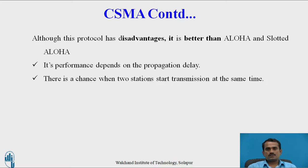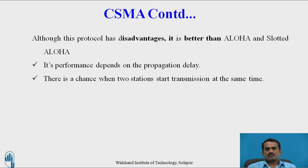In the previous video, we discussed about Aloha and Slotted Aloha. In Aloha, more than two stations can simultaneously want to transfer data, and after transmitting, a collision may occur — the user has to resend the data. In Slotted Aloha, the user prepares slots for transmitting the data; if the current station is busy, data is forwarded only according to the slots. Its performance depends on propagation delay, and there is a chance when two stations start transmission at the same time that a collision may occur.